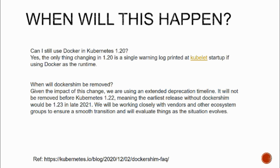The earliest removal will be around Kubernetes 1.23, which will be in late 2021, based on the Kubernetes roadmap. How many of us are already using Kubernetes 1.19? We still wait for versions to stabilize before using them, so we still have good time to analyze, experiment, and decide on the right container runtime before panicking. This reference is from the FAQ document provided by kubernetes.io when this panicking started.